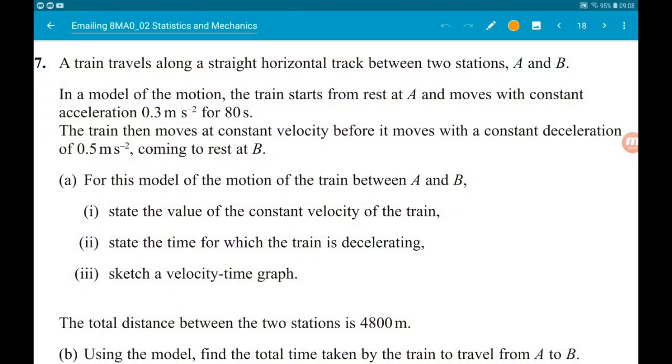Question 7, pretty big one. A train travels along a straight horizontal track between two stations A and B. In a model of the motion, the train starts from rest at A and moves with a constant acceleration of 0.3 meters per second squared for 80 seconds. The train then moves at constant velocity before it moves with a constant deceleration of 0.5 meters per second squared, coming to rest at B.